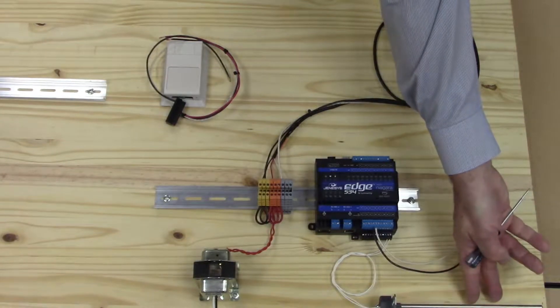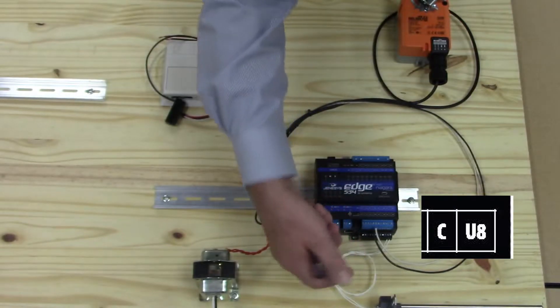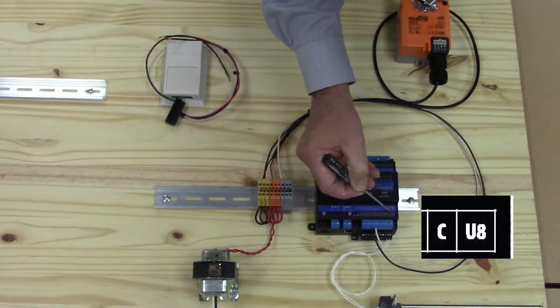Here is our Type 3 thermistor. It's a simple two-wire device. It is connected to a universal input here. In this case it is universal input 8, and also the other wire is common.